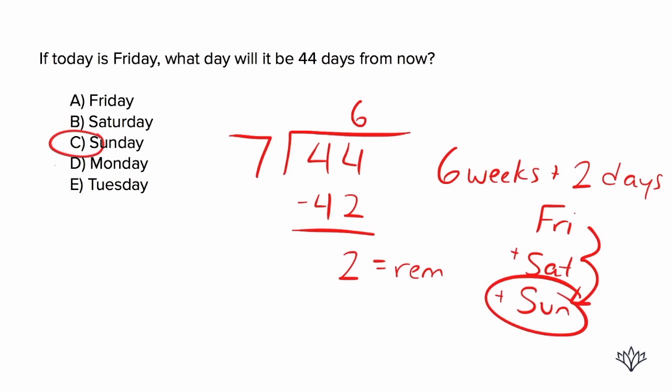Questions like this are all about patterns. You have to identify the pattern — here it was that every seven days we landed on a Friday. The long division also helps us so we're not actually counting all 44 days. With questions like this, be careful because our answer was Sunday, but Saturday and Monday are also there as answer choices to trip you up. Just make sure you're careful with your work.